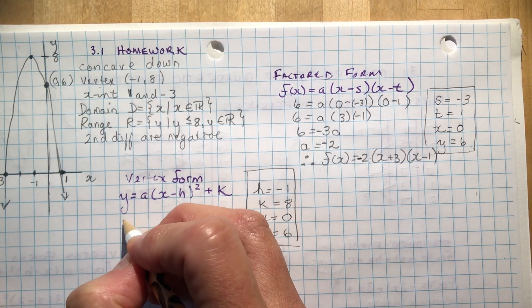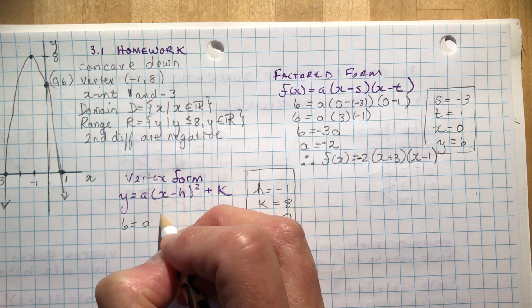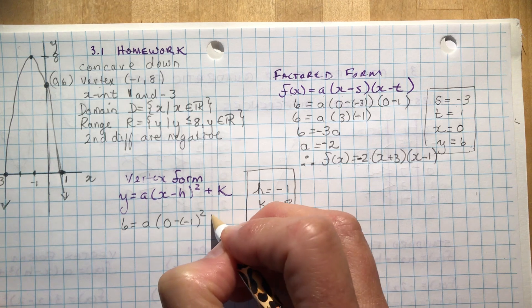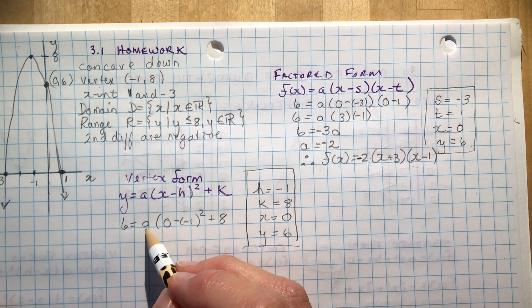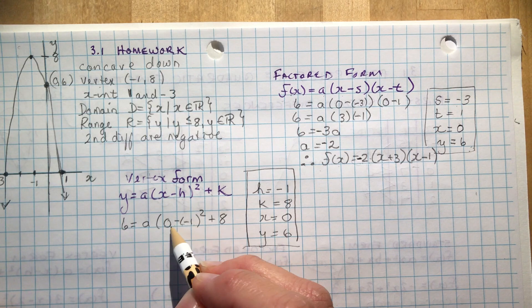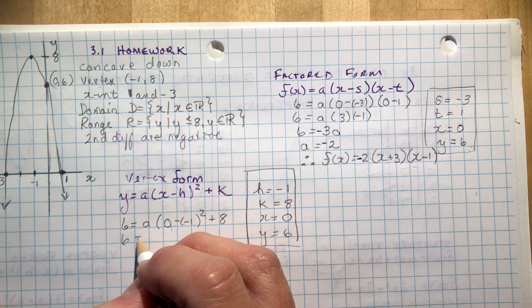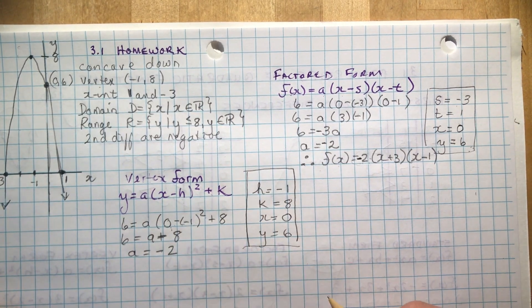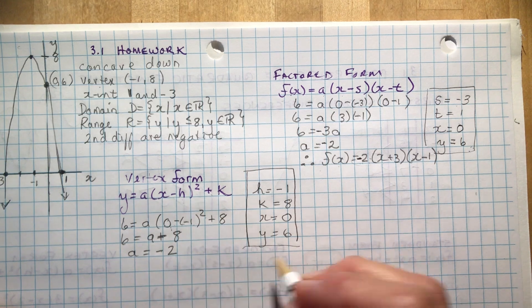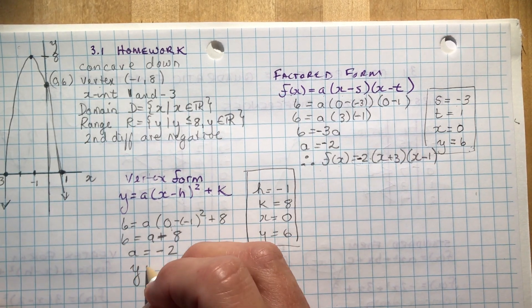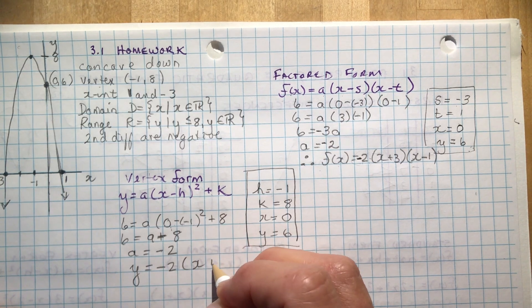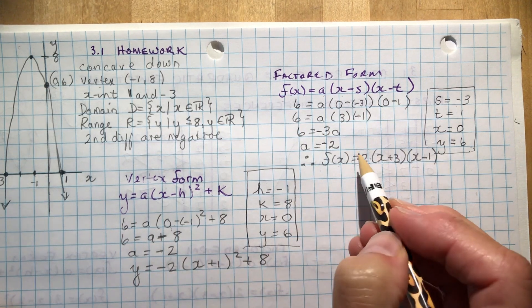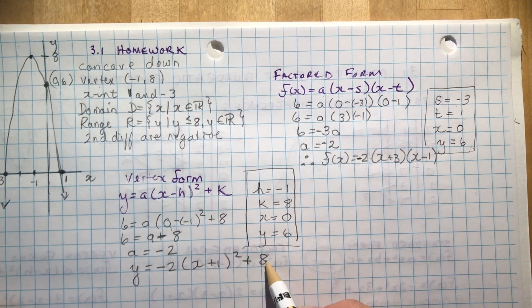So once you had minus 2 here, you could have gone directly to the vertex form by just plugging in the vertex here. But let's do it the long way. Say we hadn't done this factored form. And I would say, okay, that means that 6 is going to be equal to a times (0 minus minus 1) squared plus 8. And 0 minus minus 1. That's 1 squared is 1. So I have 6 is equal to a plus 8. And a is equal to minus 2. So the vertex form then would be y is equal to minus 2(x plus 1) squared plus 8. Same thing here. This one gave you the zeros. This one gave you the vertex.